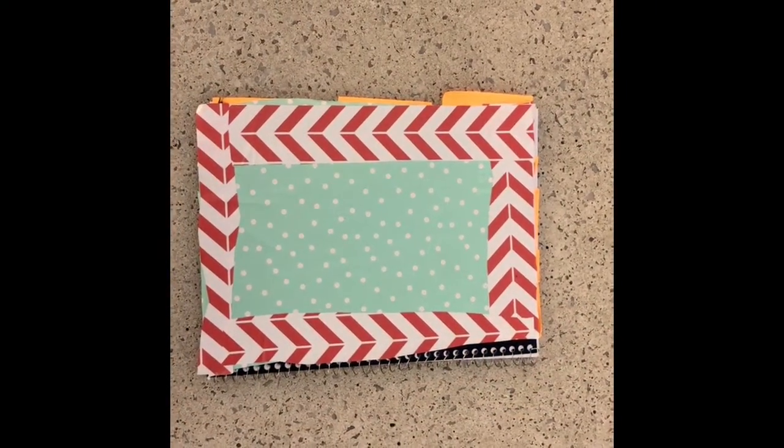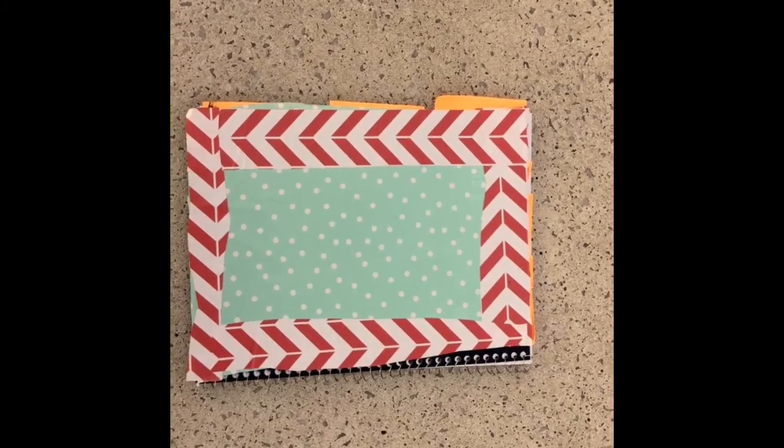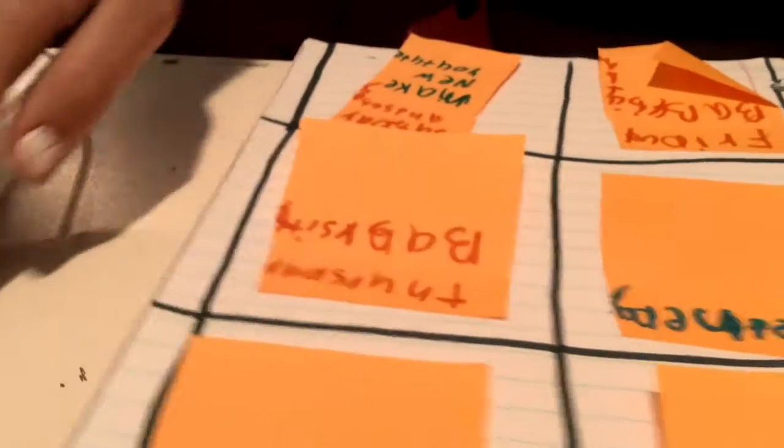So this is what it should look like when you are all finished. So now taking the same notebook or a different notebook, we're going to make a sticky note planner. So what you're going to need is sticky notes, some paper or notebook, and you're also going to need scissors and something to write with.